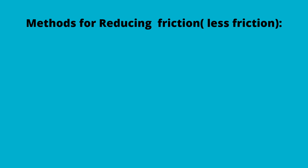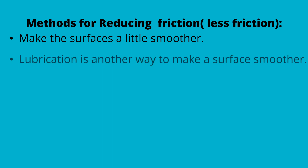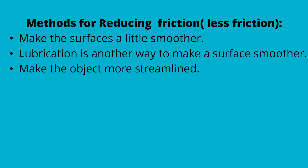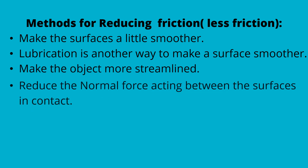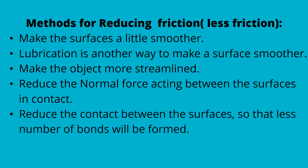What are the ways of reducing friction? You can make the surfaces smoother. Lubrication is another way to make a surface smoother. Make the object more streamlined. Reduce the normal force acting between the surfaces in contact. And reduce the contact between the surfaces so that fewer bonds will be formed.